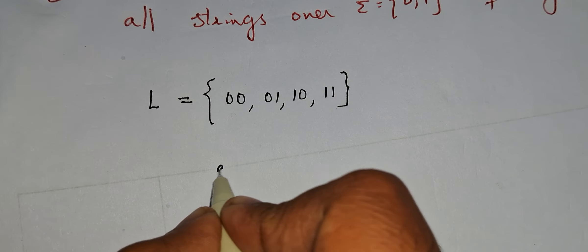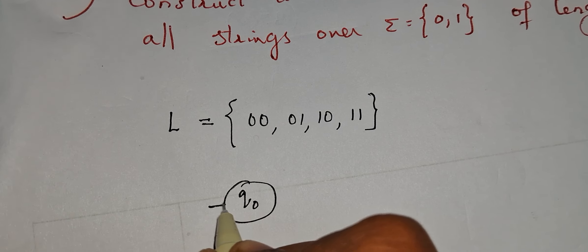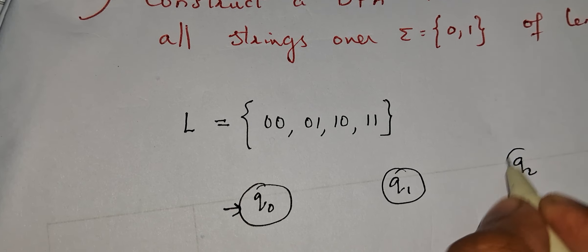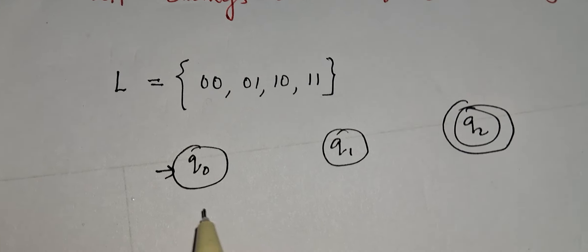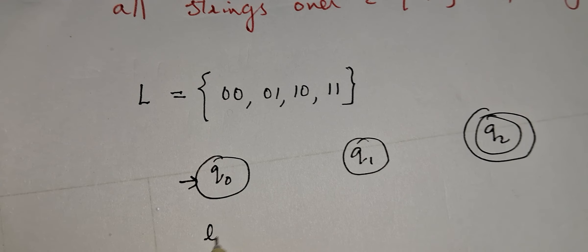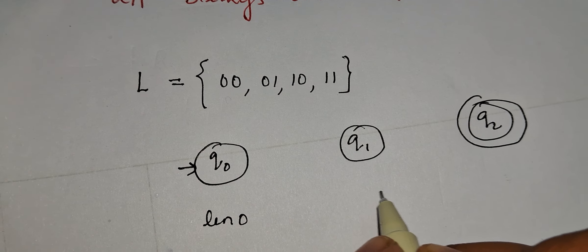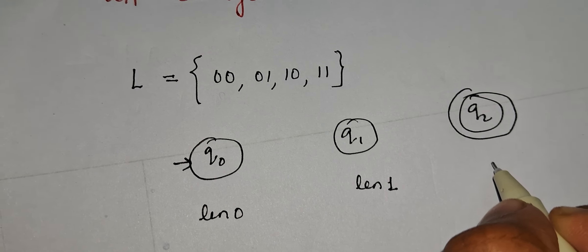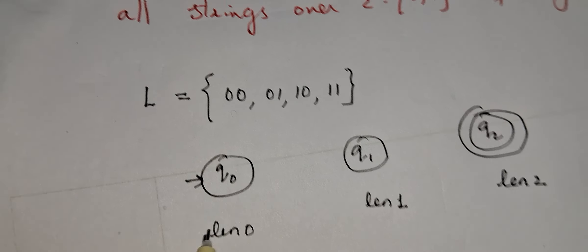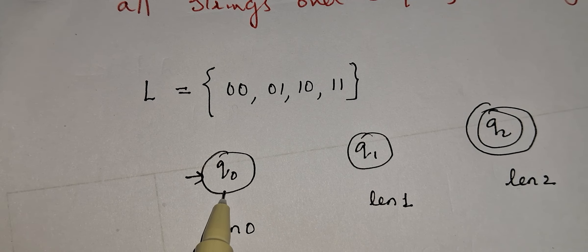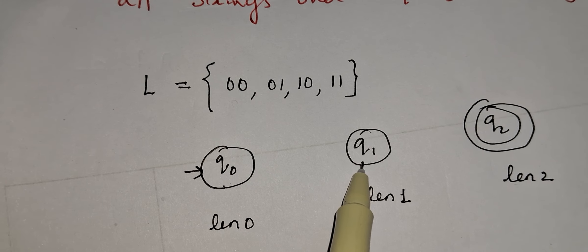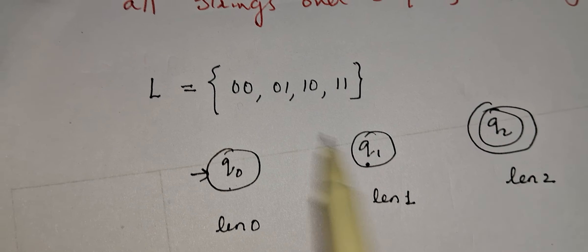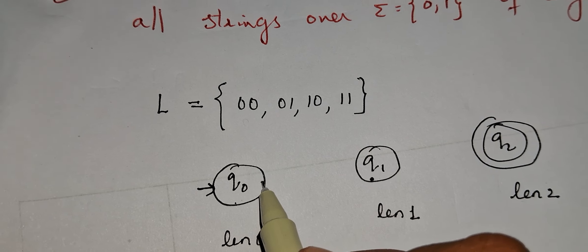Since all strings are of length 2, we draw three states: starting state q0, then q1, then q2. When we reach q0 the length is 0; when we reach q1 the length becomes 1; when we reach q2 the length becomes 2. This is our skeleton.